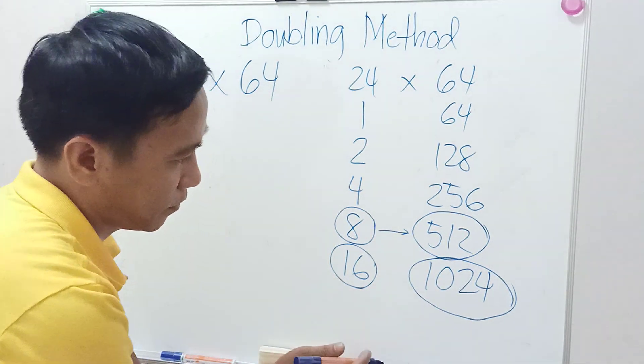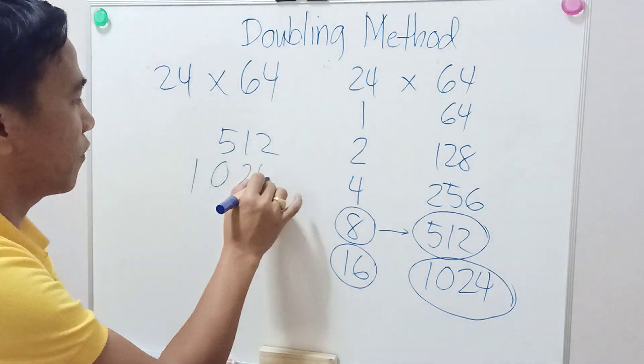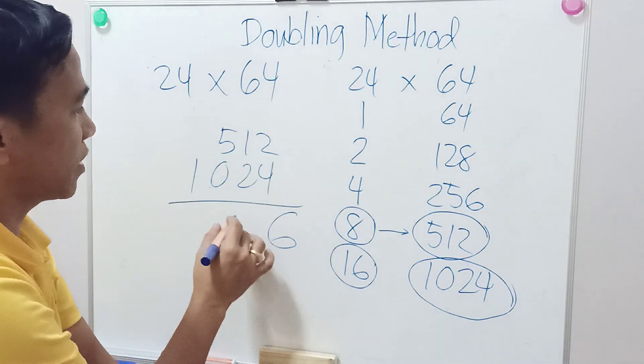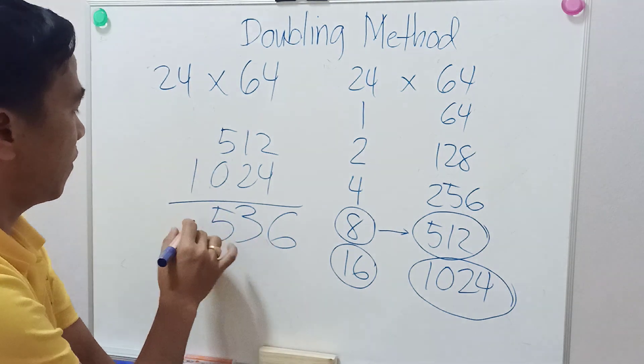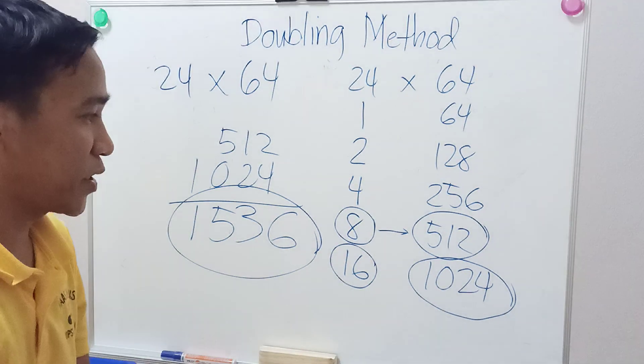So add them up: 512 plus 1024, so the answer is 1536.